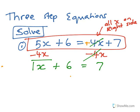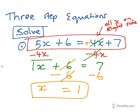And then your next step is to get rid of the 6, so you go minus 6 minus 6, the 6's go out, and you get 1x, which is x, will equal 7 minus 6, which actually gives you 1.